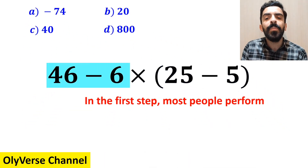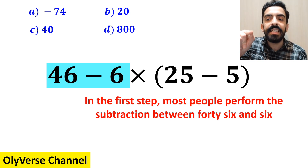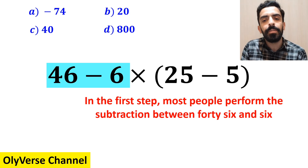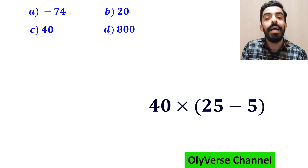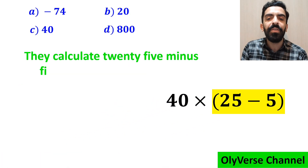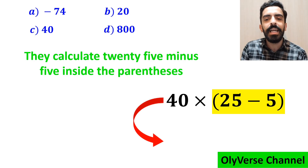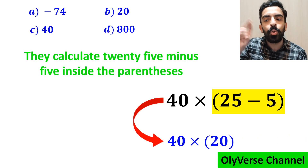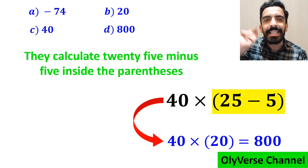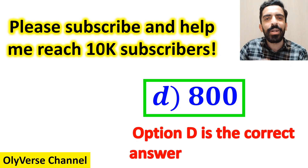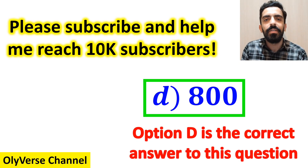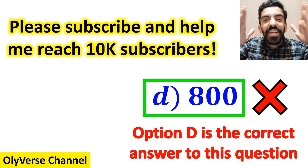In the first step, most people perform the subtraction between 46 and 6, highlighted in blue. So this expression simplifies to 40 multiplied by 25 minus 5 inside the parenthesis. In the next step, they calculate 25 minus 5 inside the parenthesis, which becomes 40 multiplied by 20. Finally, they say the value of this expression is 800, and they quickly conclude that option D is the correct answer. However, that is definitely wrong.